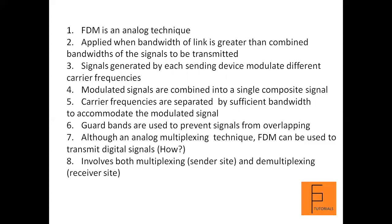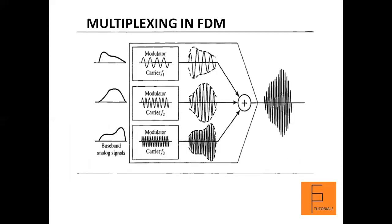Guard bands are used to prevent signals from overlapping. Carrier frequencies must also be chosen so they do not interfere with the original data frequency. Although FDM is an analog multiplexing technique, it can be used to transmit digital signals — you simply convert the digital signal into an analog signal and then carry out the transmission process.